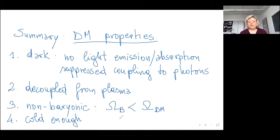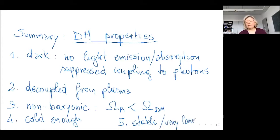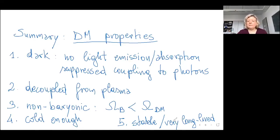A fifth characteristic is that dark matter has to be stable over very long timescales. This is because dark matter is still around — we find it in galaxies and clusters as we saw yesterday. We need it to be present also today. If the lifetime is very long we could have lost a little bit of dark matter in the meantime, but the amount lost is actually pretty small. Tomorrow we will discuss limits on this lifetime in more detail.